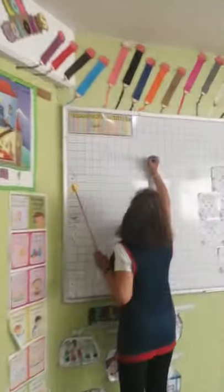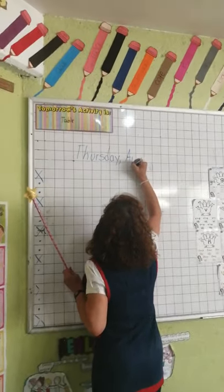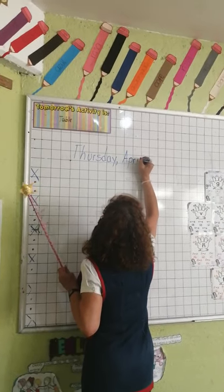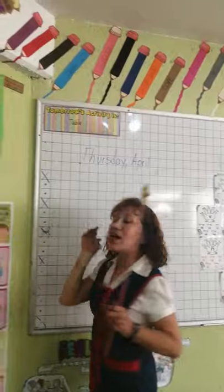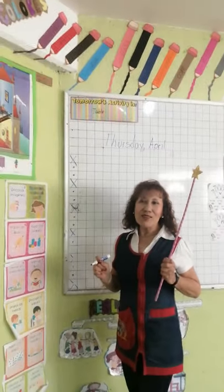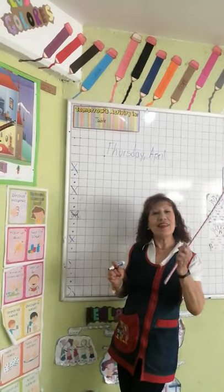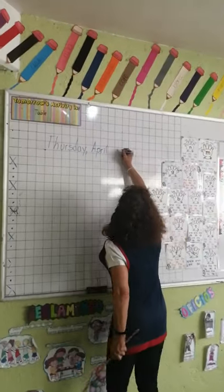Do you remember the number of the day? We are going to write April. Think — what number of day is today? Today is the 23rd. Excellent.